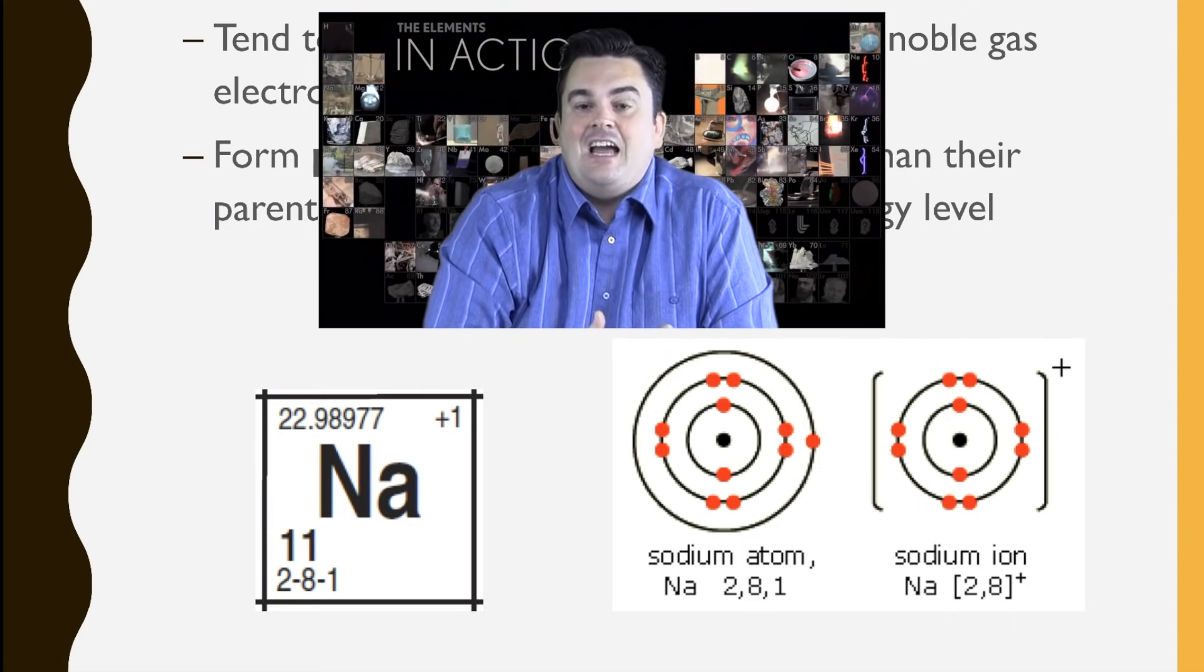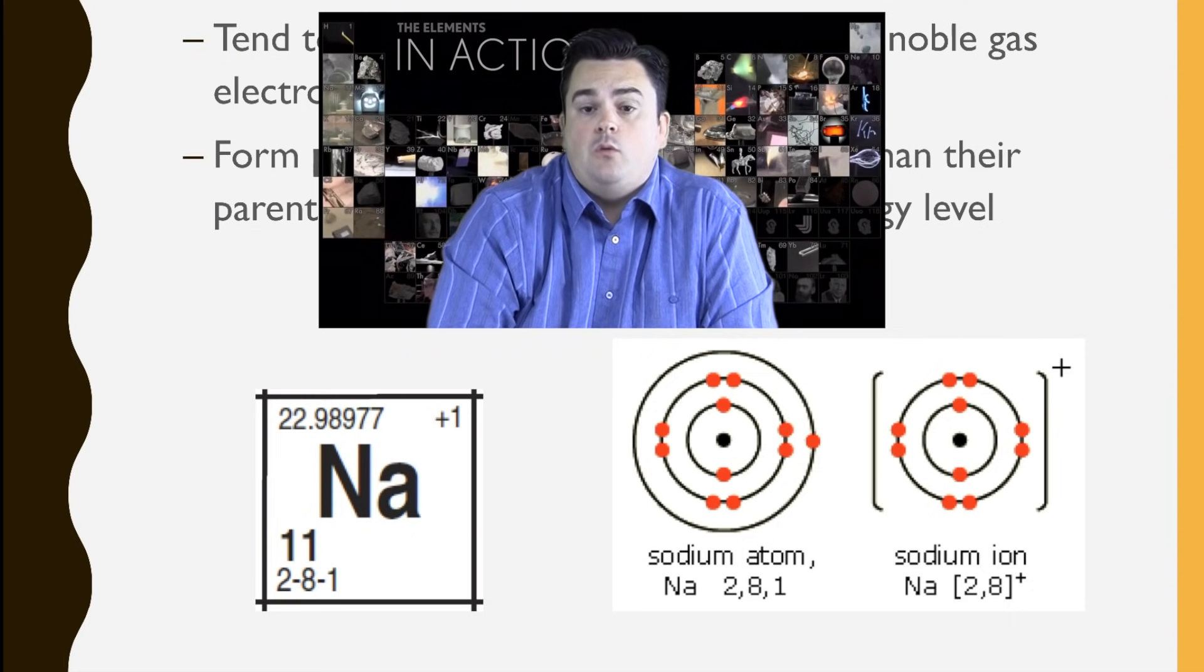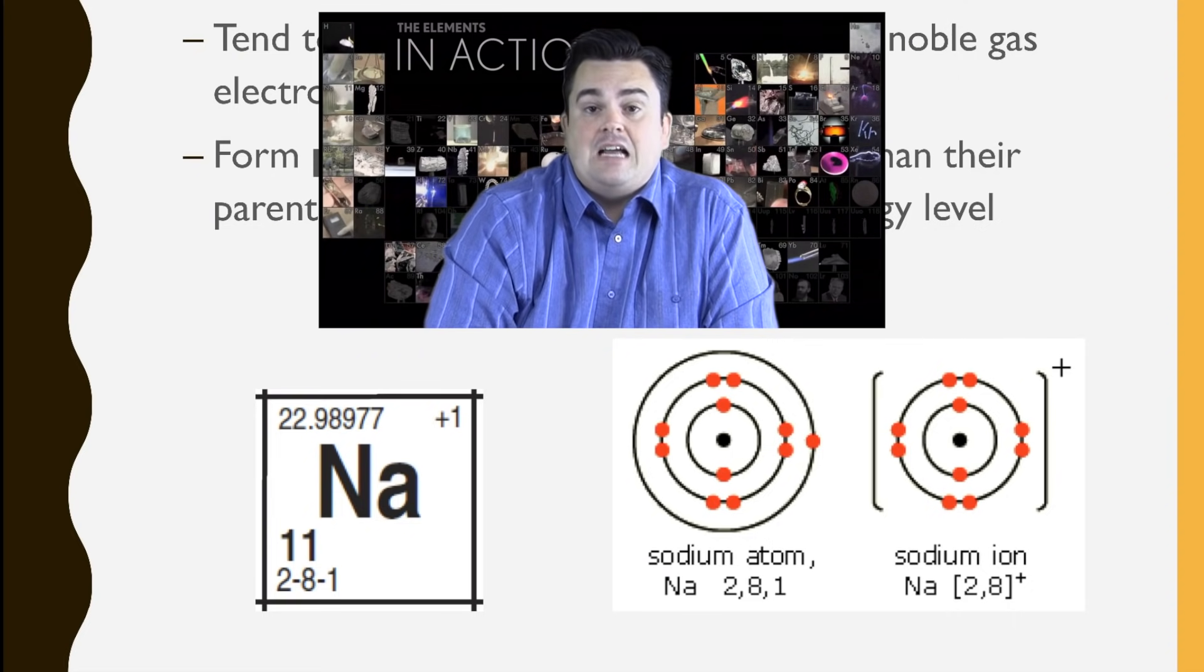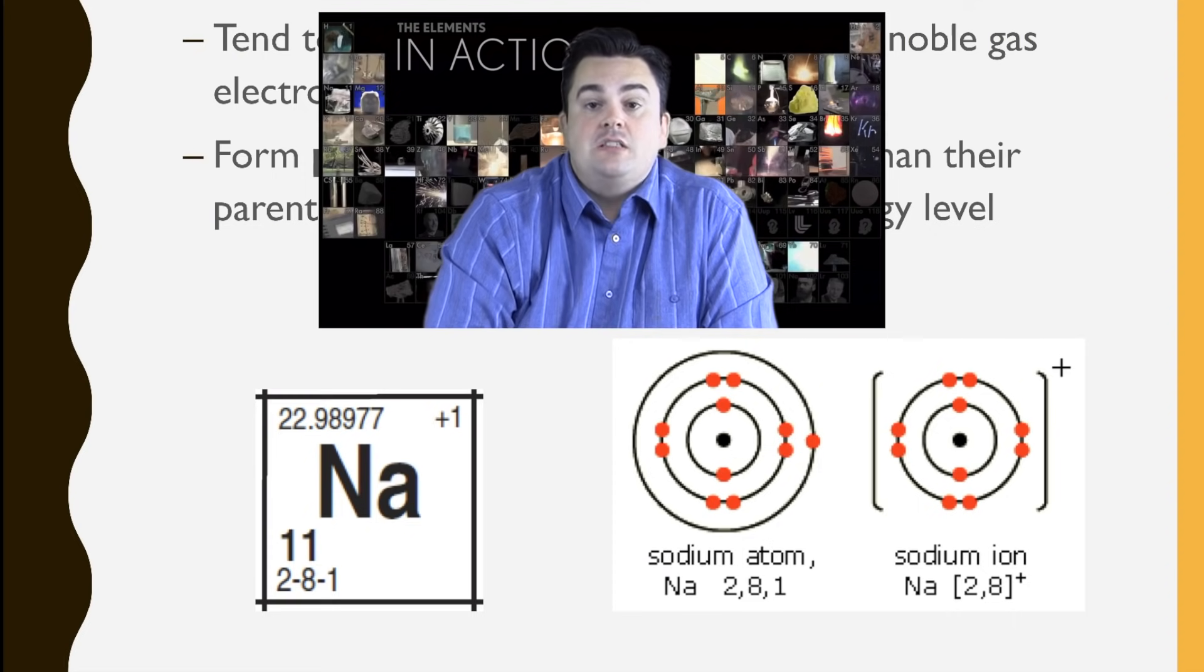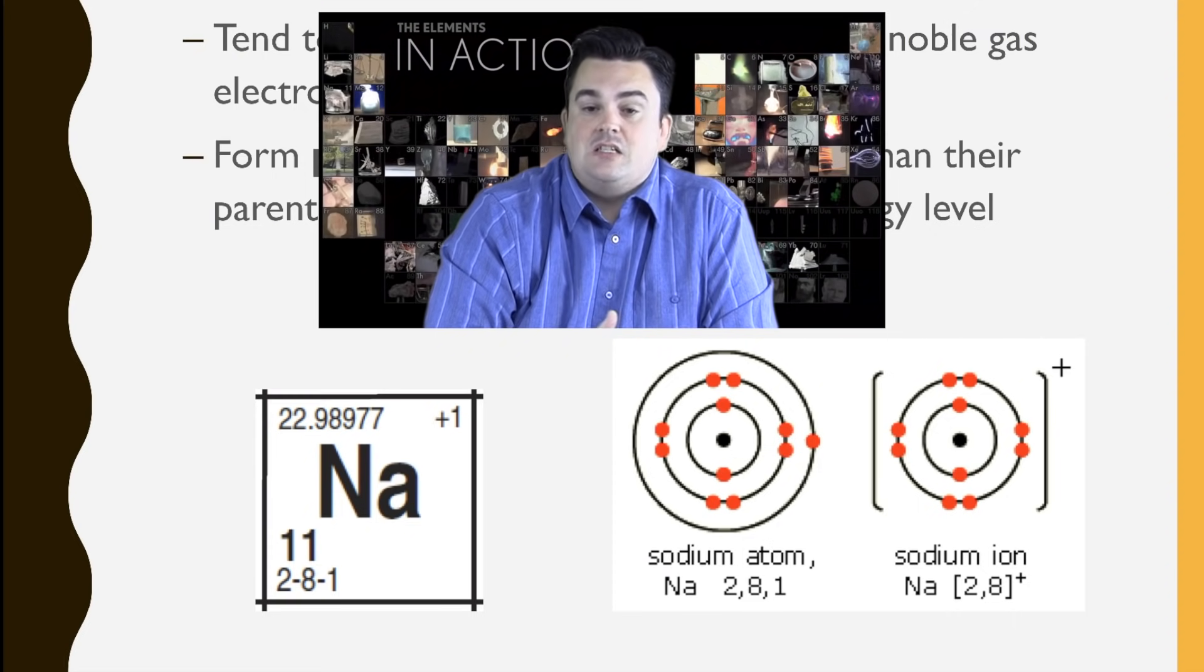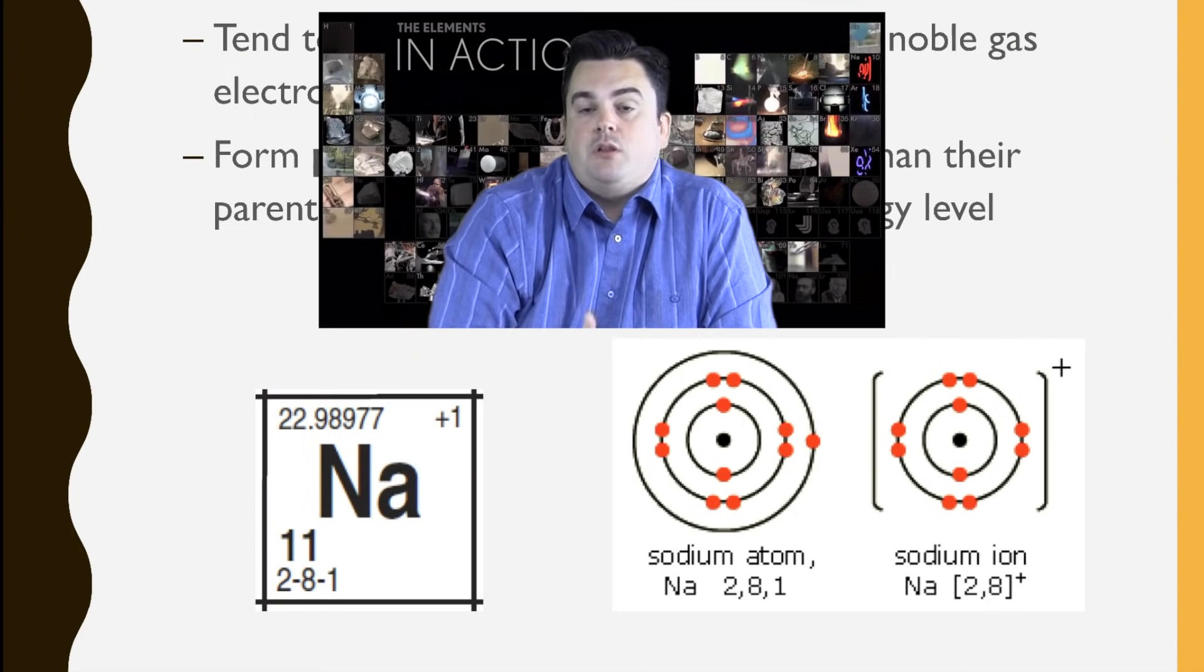So to show this in diagram form, if you look at the image on the right, we have the sodium atom, which is 2, 8, 1, and showing that 1 dot in the third shell. Now when it becomes an ion to lose that 1 electron, it loses that shell. It ends up becoming smaller and has a plus 1 charge.